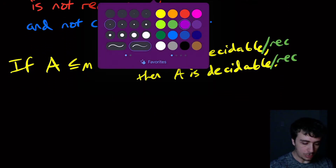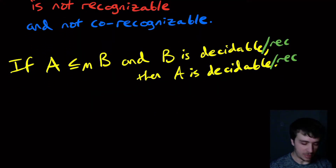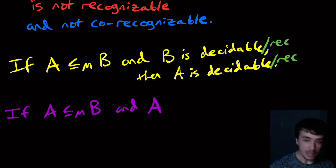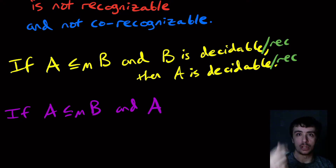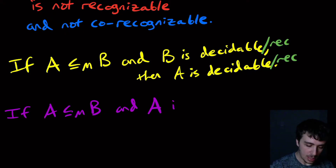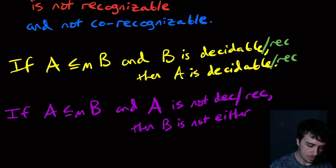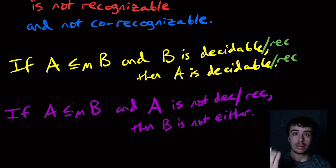The work actually uses the contrapositive: if A mapping reduces to B and A is not decidable — or not recognizable, depending on which one you're looking at — then B is not either. This is just the contrapositive of the original statement.